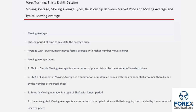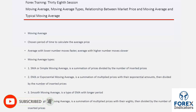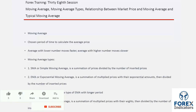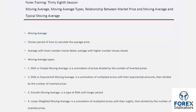LWMA, or linear weighted moving average, can be calculated through the summation of prices multiplied by their certain weight, then divided by the number of prices inserted. The maximum weight — multiplied by the most recent price — equals the number of prices inserted into the LWMA. The weight of each price is deducted based on the number of timeframes away from the latest price, so the earliest timeframe will be multiplied by one.